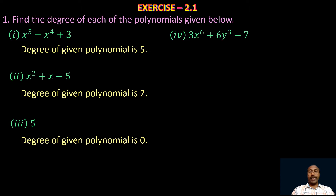Take the fourth one: 3x⁶ + 6y³ − 7. In the first term the degree is 6, in the second term the degree is 3, and in the third term the degree is 0. So the highest power is 6, and the degree of the given polynomial is also 6.